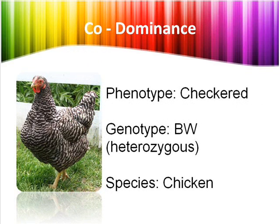Where did this checkered chicken come from? If one parent had the dominant gene — black — and the other had the recessive gene — white — shouldn't the offspring be black? It should, if this species followed a complete dominance pattern of inheritance, but it does not. In the co-dominance pattern of inheritance, which this chicken follows, the offspring shows both its phenotypes, or traits, of the parents equally. In this case, the chicken shows both the black and the white in its checkered color.